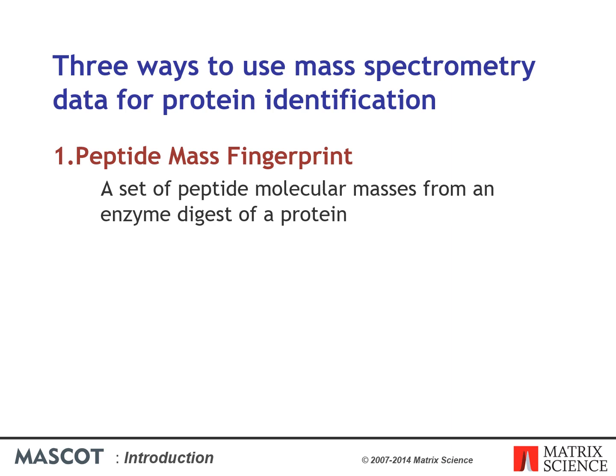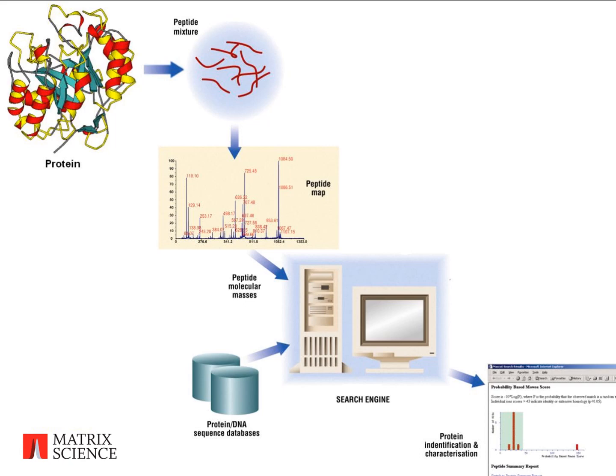There are three proven ways of using mass spectrometry data for protein identification. The first is known as a peptide mass fingerprint. This was the original method to be developed, and uses the molecular masses of the peptides resulting from digestion of the protein by a specific enzyme. The resulting mixture of peptides is analysed by mass spectrometry, yielding a set of molecular mass values which are searched against a database of protein sequences using a search engine.